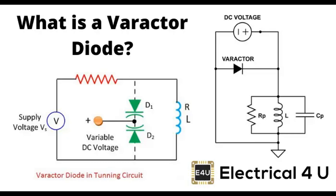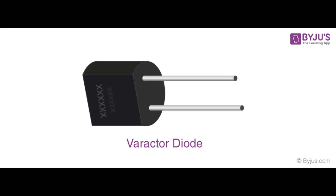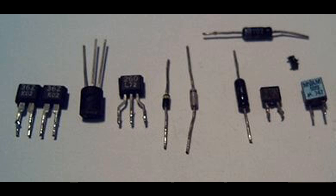Capacitance variation: The primary function of a varactor diode is to provide a capacitance that can be varied by changing the reverse-bias voltage applied to it. Reverse-bias operation: When a reverse-bias voltage is applied, it widens the depletion region of the P-N junction, resulting in a change in capacitance.